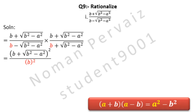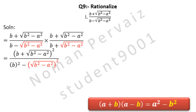In our question, A is B and B is under root B squared minus A squared. So by applying the formula, B squared is written, minus comes from the formula. Now look at the formula below: we have to write B squared. R, B is under root B squared minus A squared, so we write under root B squared minus A squared, whole square.